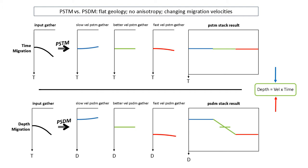At the top is a time migration procedure. Starting with an input gather on the left — if we pre-stack time migrate it, if the velocities are too slow, they tip up at the far offsets. If the velocities are better, it's flat, and if the velocities are too fast, it tips down at far offsets.